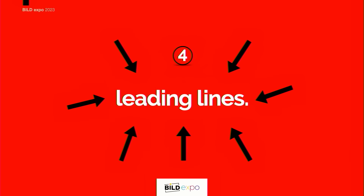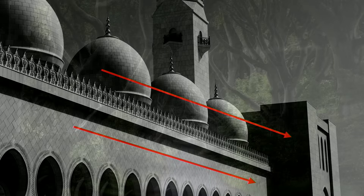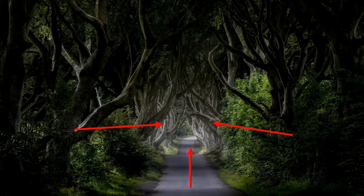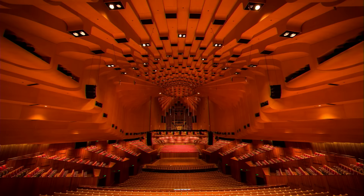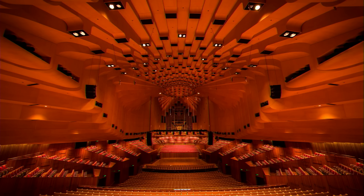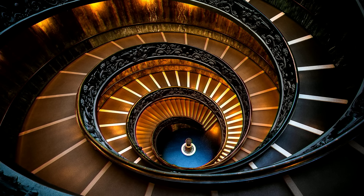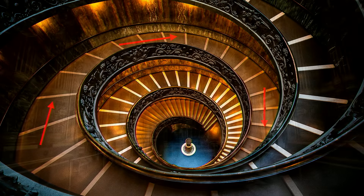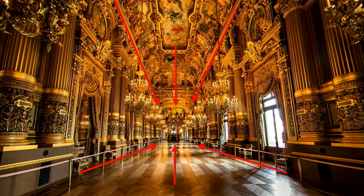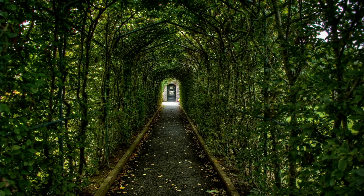Number four, of course, is leading lines. You use these lines to help draw the viewer into the photo - it creates a focal point for them. I was out on the ice looking for a crack aimed towards the mountain I wanted to shoot. They don't have to be straight lines - you can have curving lines. There are a number of different ways to use leading lines.